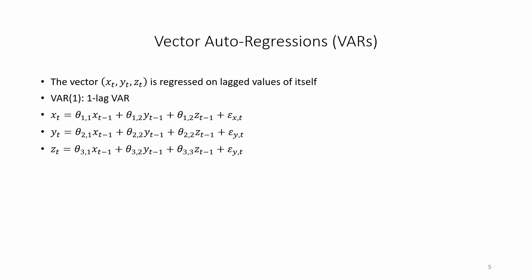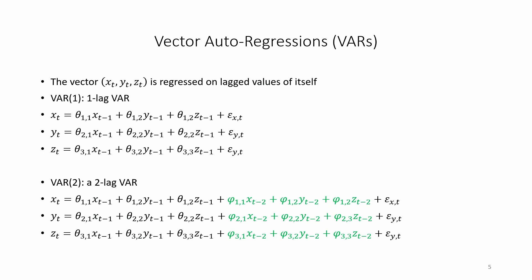Here is an example of a vector autoregression with three variables. The vector xt yt and zt is regressed on lagged values of itself. This is what a one lag var model would look like. And this is what a two lag var model would look like with the second lag shown in green, that is added on behind the first lag.